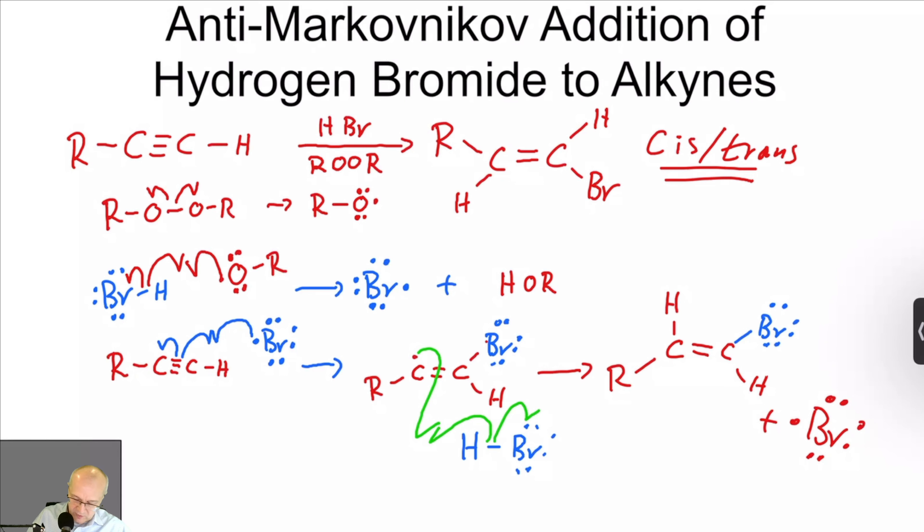And you form your halogenated alkene. Now remember, this is going to give you a mixture of cis and trans isomers. So that's fine.